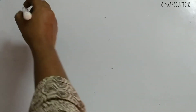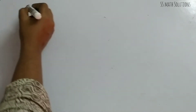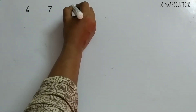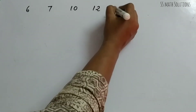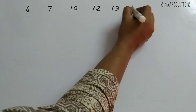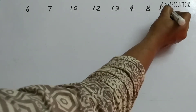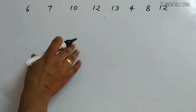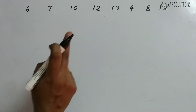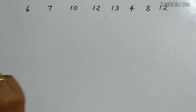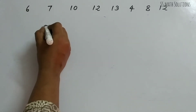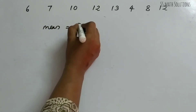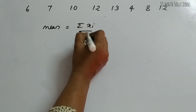The data given is: 6, 7, 6, 7, 10, 12, 13, 4, 8, and 12. The question asks us to find the mean deviation about the mean, so firstly we need the mean.